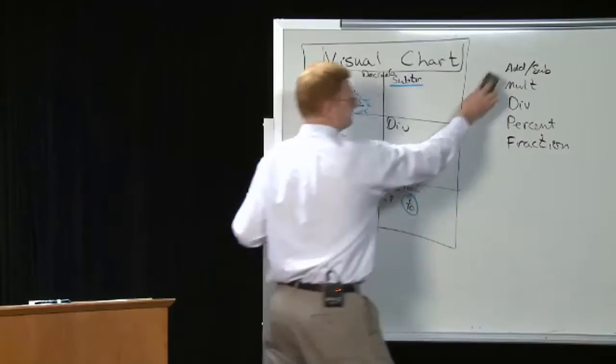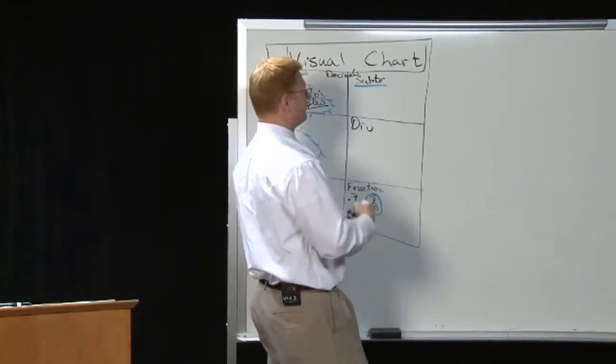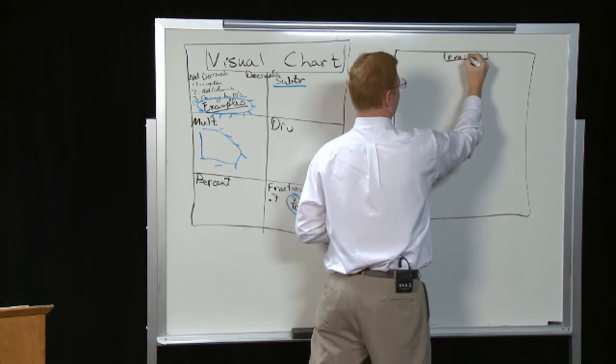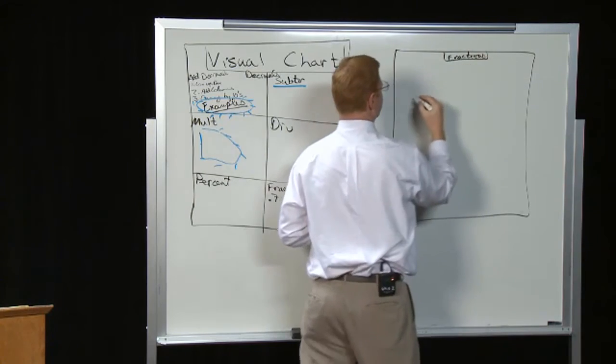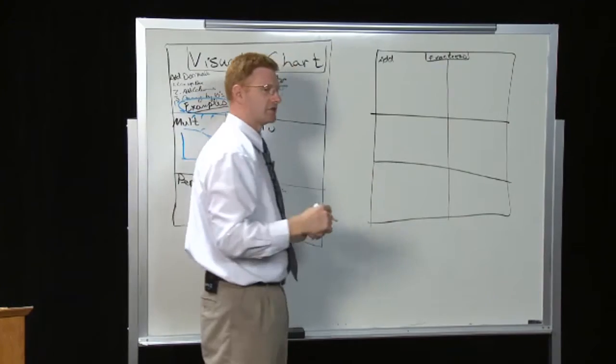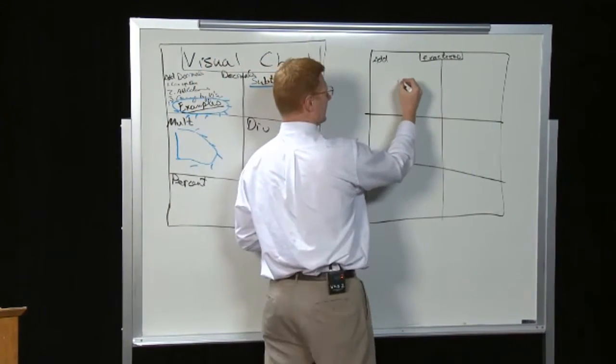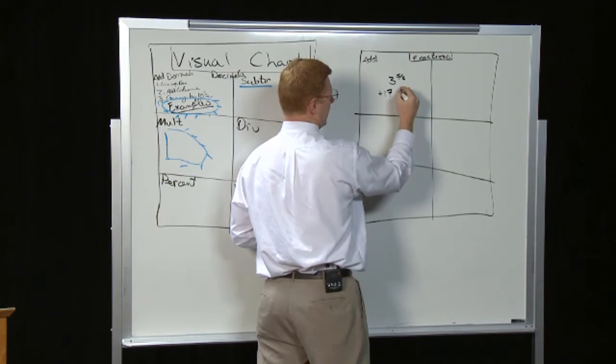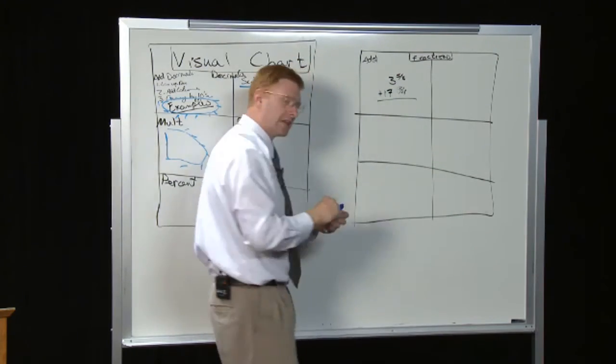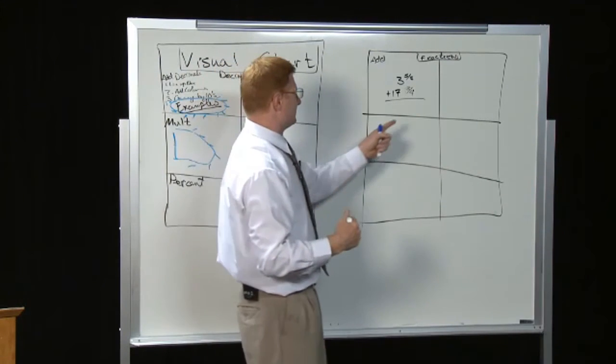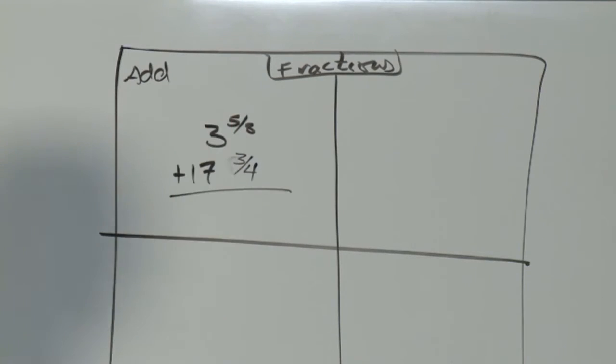You'll make one for decimals. Then we're also going to make one for fractions. And if you don't want to title them all visual chart you don't have to. If you want to save more room for what you have. Fractions. And again you're going to. How do you add it? How do you add fractions? Remember when we had something like three and five eighths plus seventeen and three fourths. Think about doing that problem. Write down all of the steps.